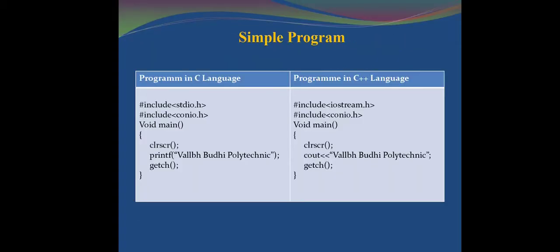Here is a simple program in C language. In C, we use the header files stdio.h and conio.h — stdio.h for input-output and conio.h for the clrscr and getch functions, which are also used in C++ programs. clrscr is used to clear the screen and getch is used to hold the output screen. The difference between these two programs is first the header file: in C we use stdio.h, and in C++ we use iostream.h, which means input-output stream.